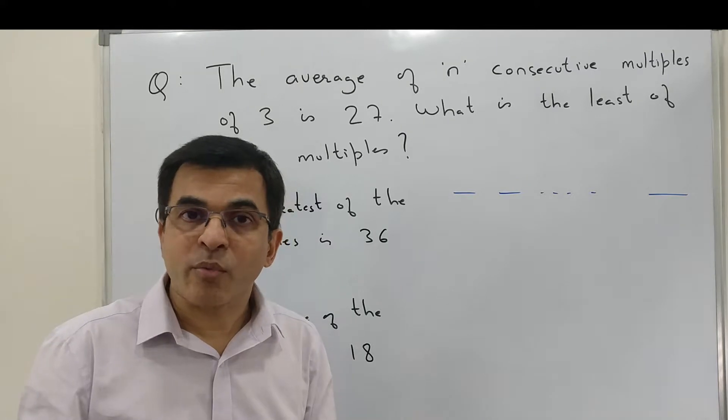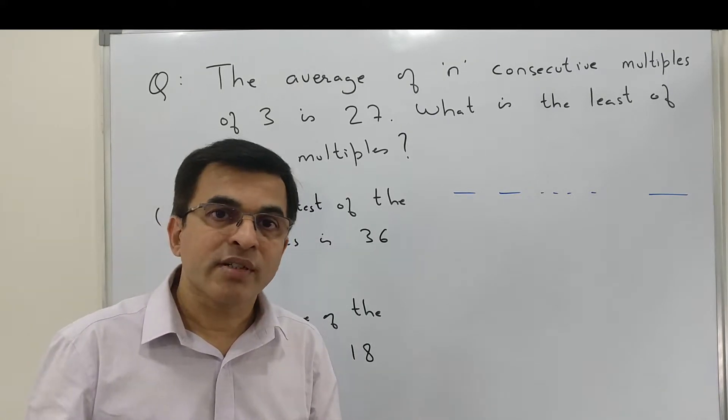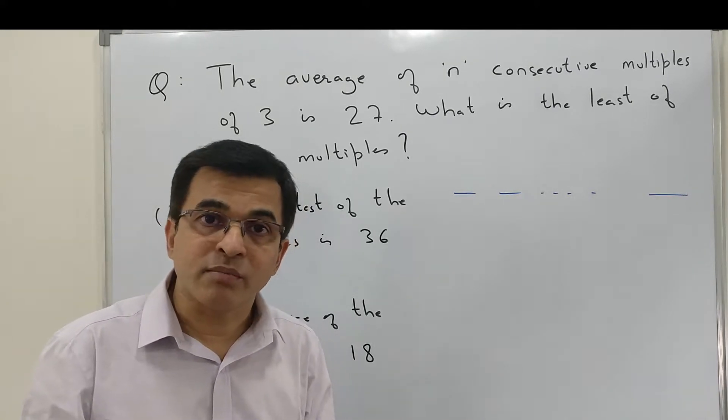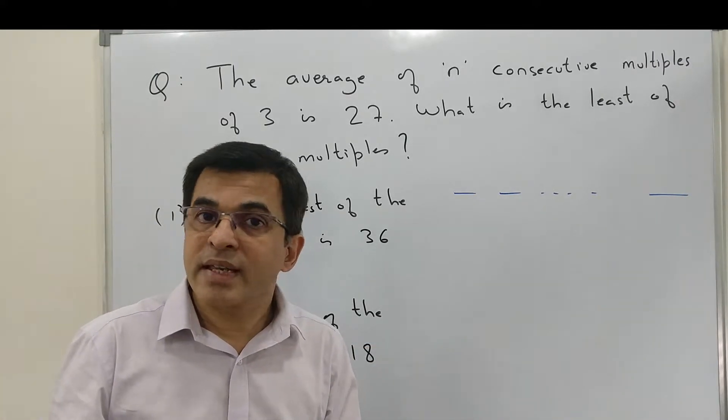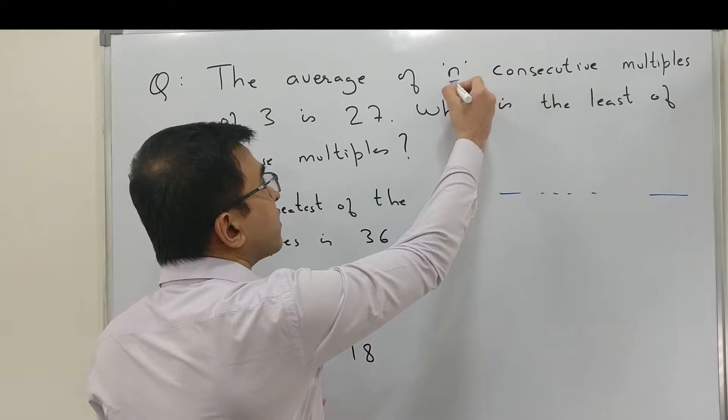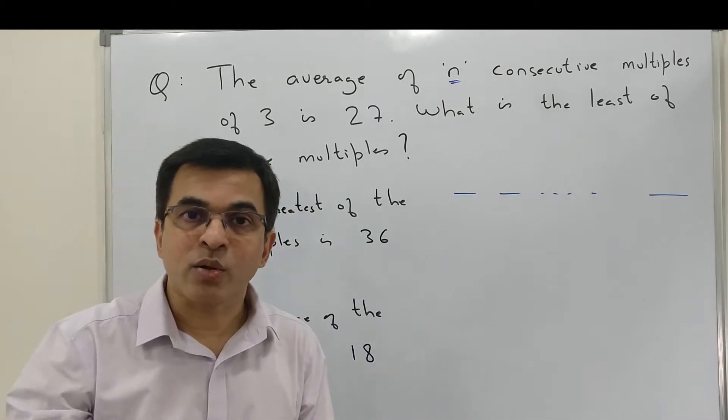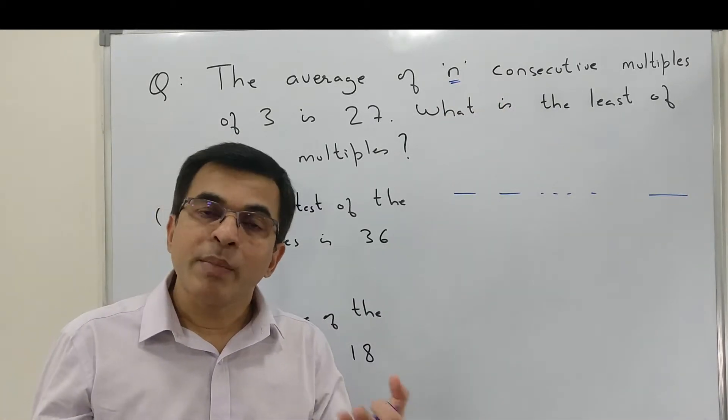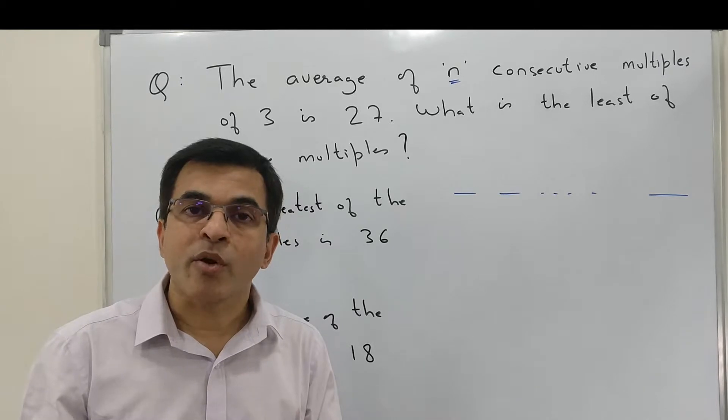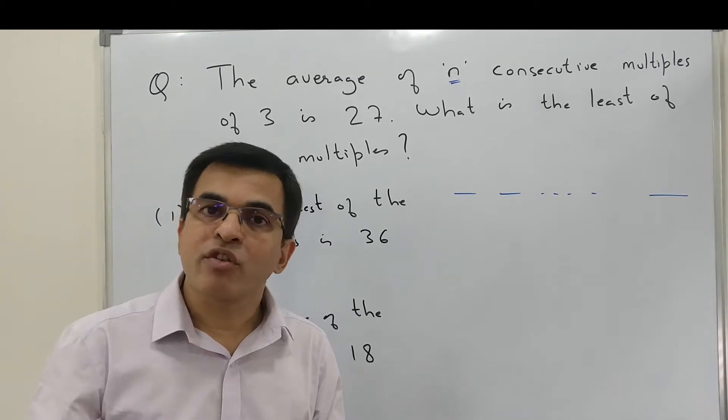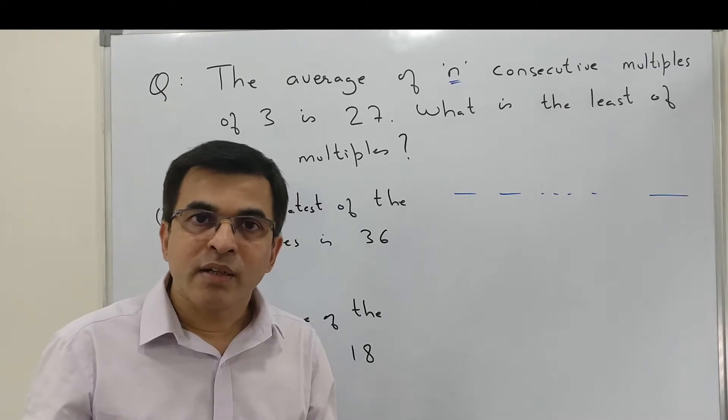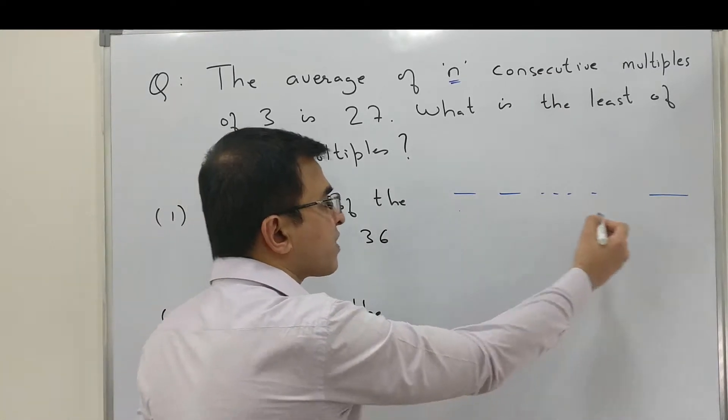However, we don't really know where the middle term is in this case because we don't even know the n value. Therefore, we can make use of a second very powerful property of arithmetic progressions: the average of any AP is nothing but the average of its first and last terms.